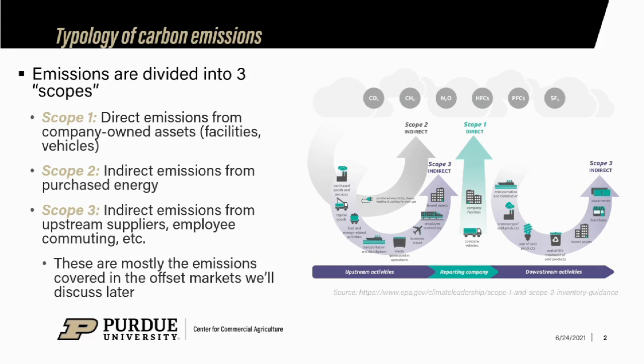Scope 1 emissions are just the direct carbon emissions that come from your plant, factory, or the cars you drive around. These are the emissions that you have direct control over. Scope 2 and 3 are emissions that in some cases you may have some control over, but you have a smaller degree of control.